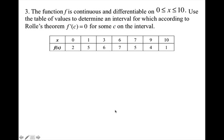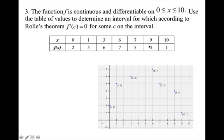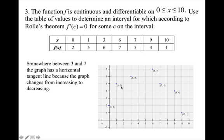The last example: the function f is continuous and differentiable on [0,10]. Use the table of values to determine an interval for which, according to Rolle's theorem, f′(c) = 0 for some c on the interval. Plotting the table values, somewhere between x = 3 and x = 7 the graph has a horizontal tangent line, because the graph changes from increasing to decreasing. So the interval from 3 to 7 satisfies the conditions of Rolle's theorem.